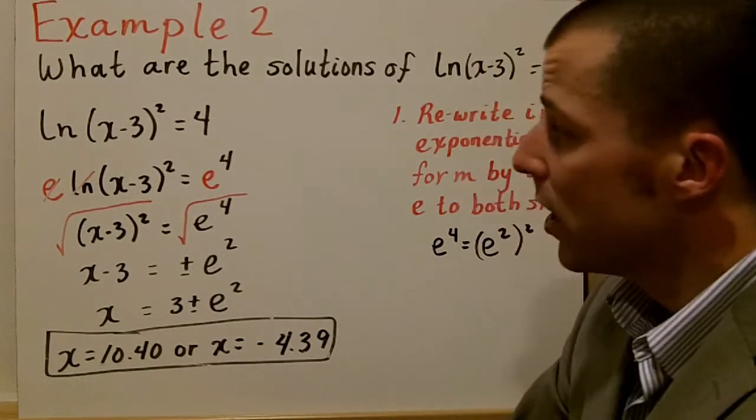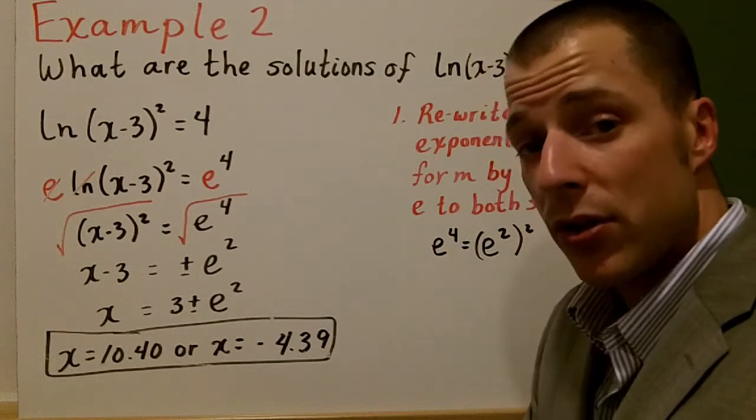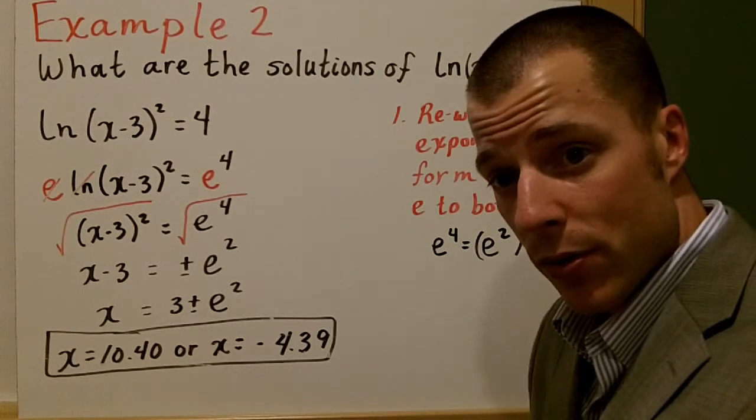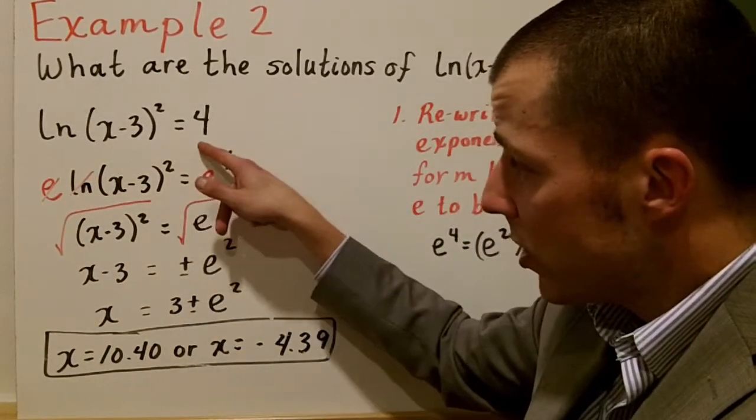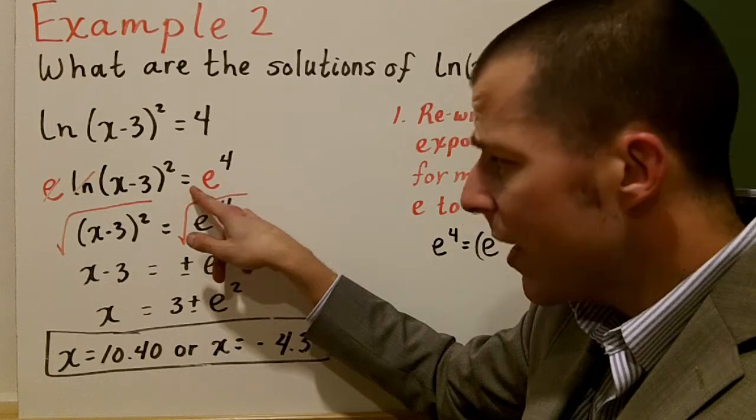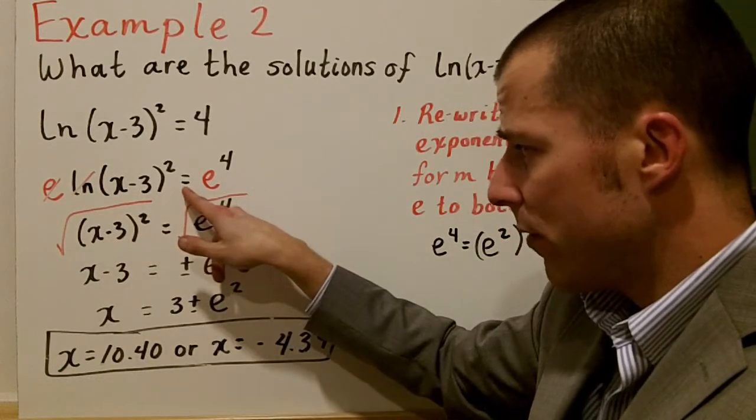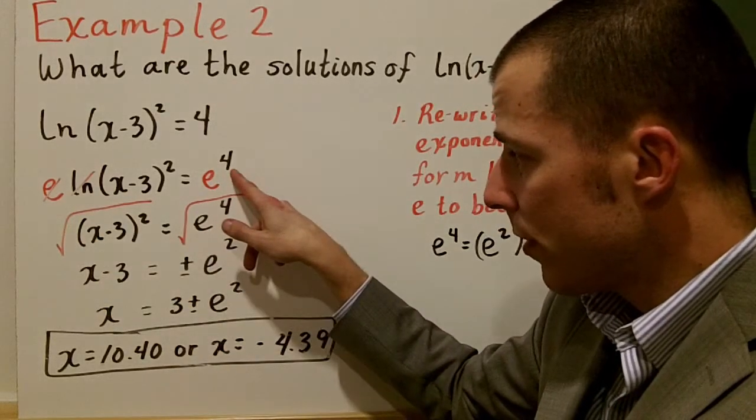When you do that, since e and natural log are inverses, they're going to undo each other, just like square roots and squares do to one another. So here's our original equation. We're going to take e to both sides, and basically you're raising each side to the power of e. When you do that, you cancel out the e and the natural log, and we have e to the 4th.